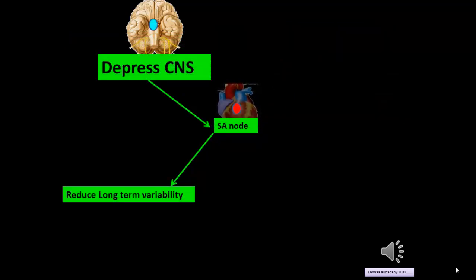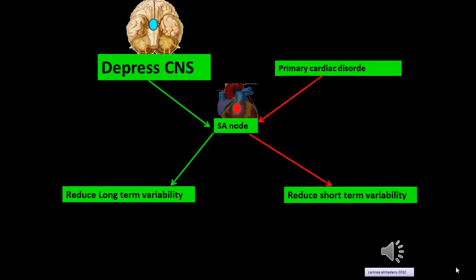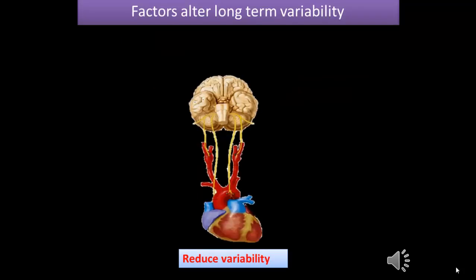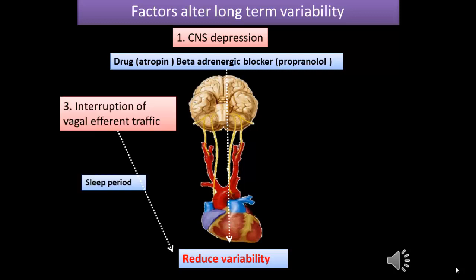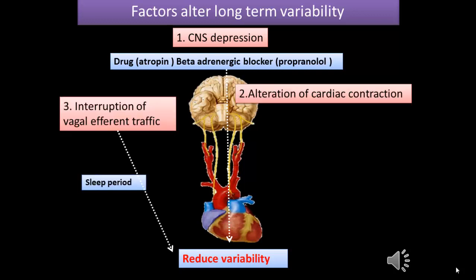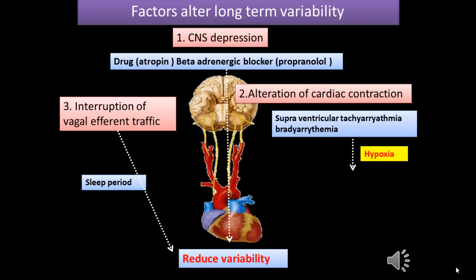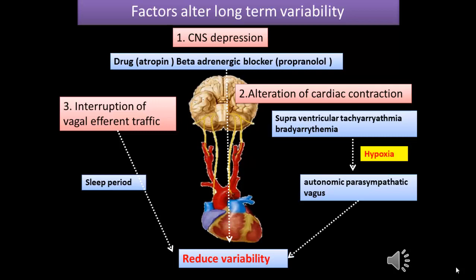Any cause that depresses the central nervous system leads to reduction in long-term variability, while a primary cardiac disorder leads to reduced short-term variability. Many factors alter long-term variability, including CNS depression by drugs, adrenergic blockers, interruption of vagal afferent traffic by sleep, supraventricular tachyarrhythmia, bradyarrhythmia, and hypoxia affecting the autonomic parasympathetic vagus.